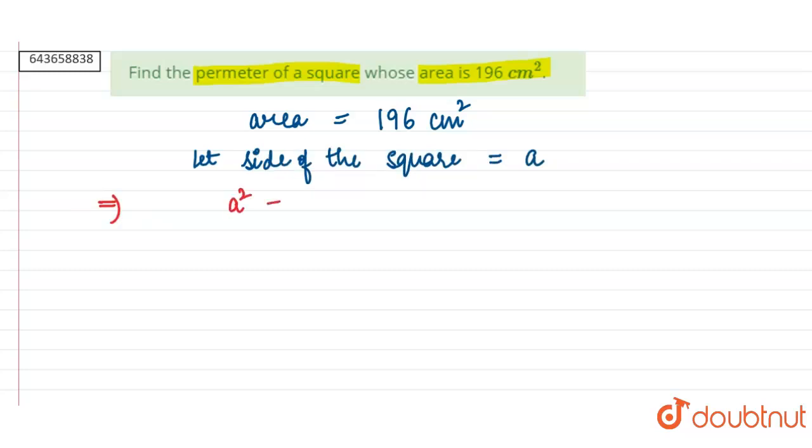This implies that A square is equals to 196. So A is equal to square root of 196. A is equal to plus minus 14 centimeters.